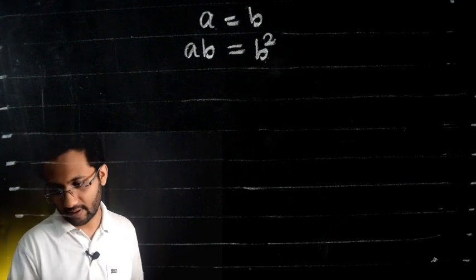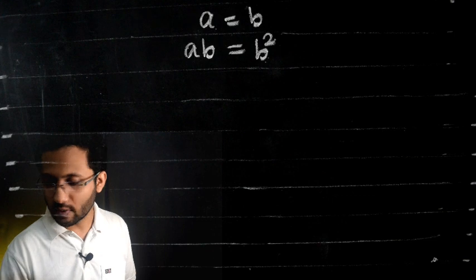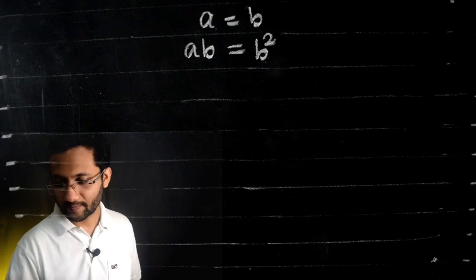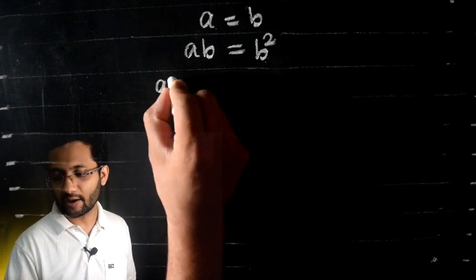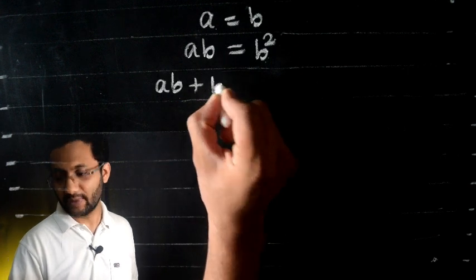Now we add b² on both sides, so left side we have ab + b², which is equal to b² + b² or 2b².